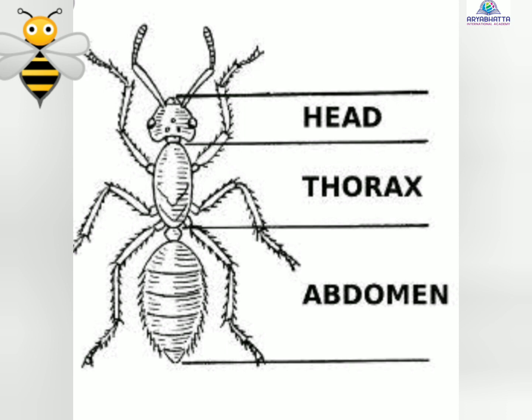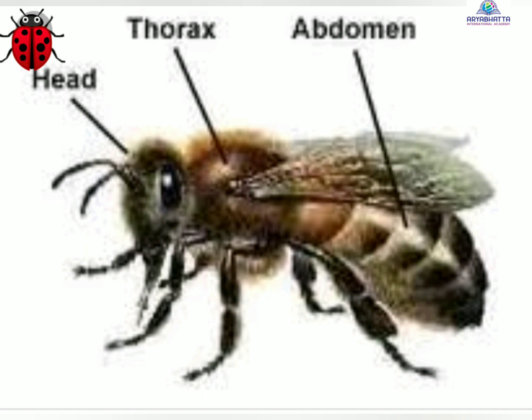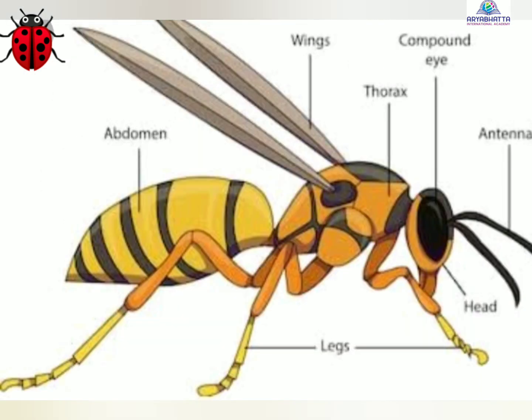Head is the front part of the body which is round and smallest of all body parts. It has one pair of eyes, a pair of antennae and a mouth. The eyes help the insect to see and the antennae mainly help it to feel or touch. Also known as feelers, the antennae sometimes also help an insect to smell and taste.